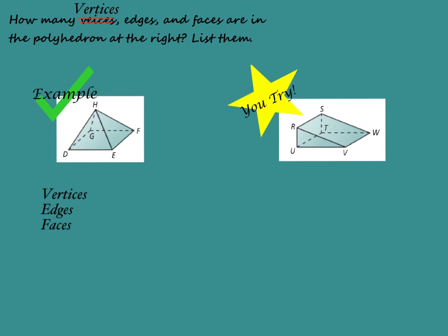In my example, I'm first going to list all my vertices. Remember, a vertex is a point where three or more edges intersect. So D, E, F, G, and H are all points where three or more edges intersect. I'll go ahead and list those: D, E, F, G, and H.